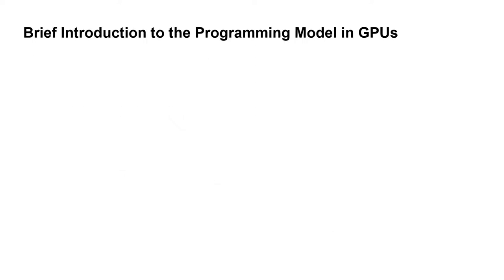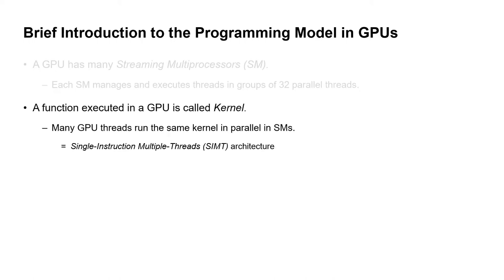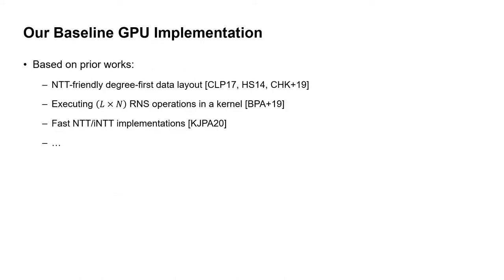Let me give a brief introduction to a contemporary GPU programming model. A GPU has many streaming multiprocessors called SMs, and each SM manages threads grouped in parallel. A function executed on a GPU is called a kernel, and GPU threads run the same kernel and instructions in parallel on SMs. This is called SIMT architecture by NVIDIA. Each kernel is configured with the number of threads it uses and the amount of shared memory it uses. The shared memory is a user-configurable scratchpad memory, which is extremely fast but also small. We implemented the baseline GPU implementation based on prior works that implement HE schemes, including cache-friendly data layout, thread launch configurations, and fast entity implementations.